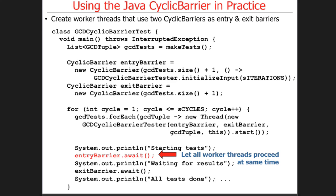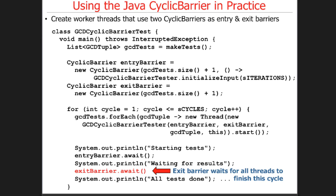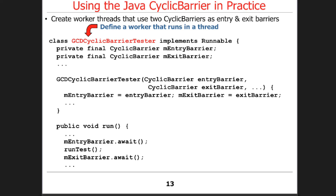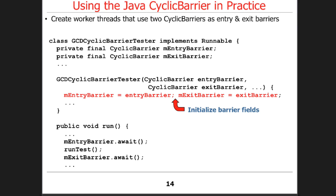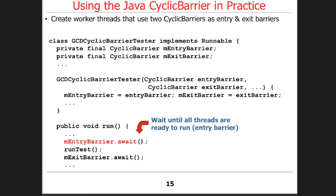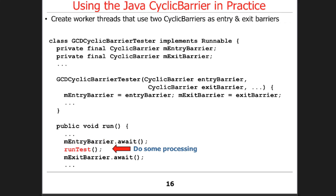When await returns, that means everybody's up and running, and then we wait on the exit barrier for all the threads to finish. In the test worker, we initialize our fields — entry and exit barriers — then call await. The difference from the countdown latch version is that this thread is not going anywhere until everybody's ready to run, so it's more coordinated. Once everybody's running, it runs its test, and once it's done, it waits for everybody to finish on the exit barrier.